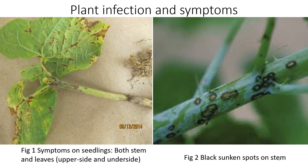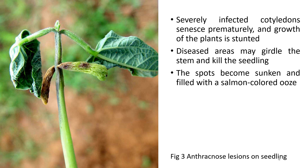Bean crop is vulnerable to bean anthracnose from seedling to maturity stage depending on the environmental conditions. Figure 1 shows the symptoms on young seedlings both on stem as well as the leaves. Figure 2 depicts black sunken spots on stem. Figure 3 illustrates anthracnose lesions on seedlings. On young seedlings, severely infected cotyledons senesce prematurely and growth of the plants is stunted. In advanced disease, diseased areas may girdle the stem and kill the seedling.